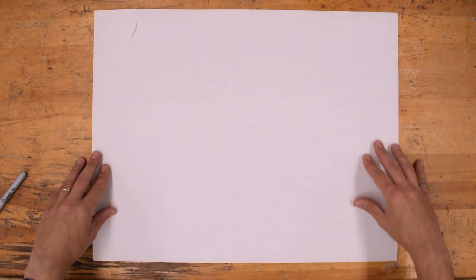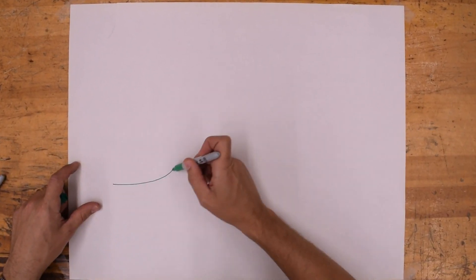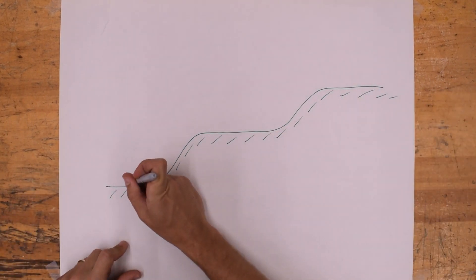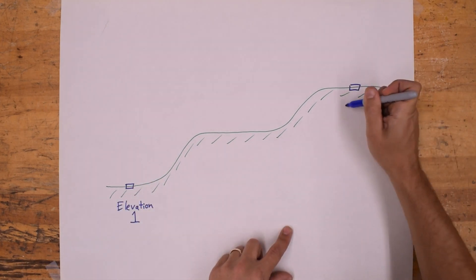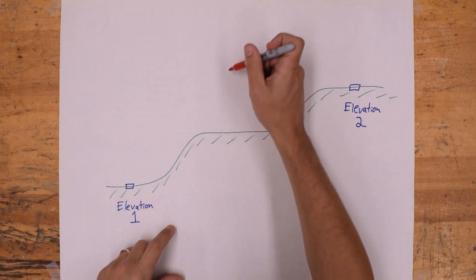So here I'll just draw a quick diagram to help explain that relationship between the readings on the level rods and the difference in elevation. So here I have drawn just an arbitrary ground with a few different elevations, and I've drawn two points with an elevation of 1 and an elevation 2.